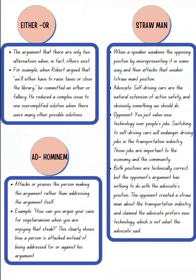The either/or fallacy occurs when you present only two choices — either this or that — oversimplifying your reasoning. This is not a proper way of providing reasoning. You must have several pieces of support to show why something supports your claim, rather than giving only two alternatives.